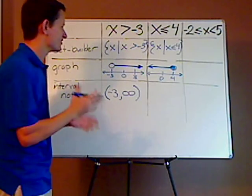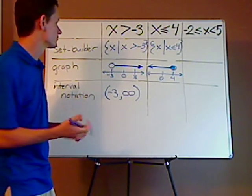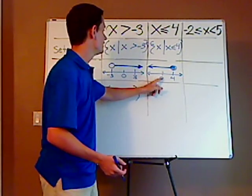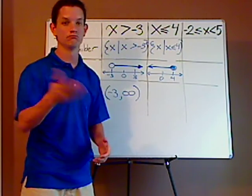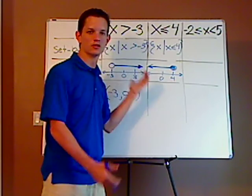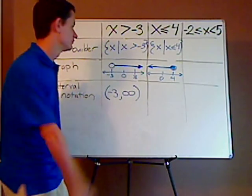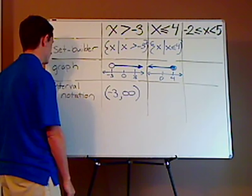If you're not really sure how to graph it, well, just plug in a number, plug in zero. Is zero less than or equal to four? And the answer is yes. So zero would be a solution, so that tells you where to go as far as your graph is concerned.